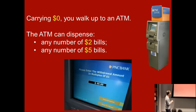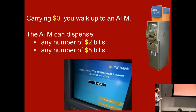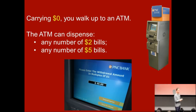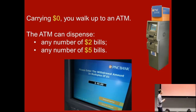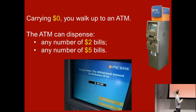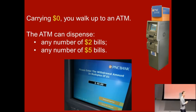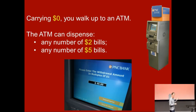Let us start with deductive systems. I'll explain what I mean with an example. Say you have $0 in your pocket and you walk up to an ATM — it looks like the one on the third floor. This is a bit of a strange ATM. It can dispense $2 bills and $5 bills, any number of them. $2 bills really exist; you may see them from time to time.